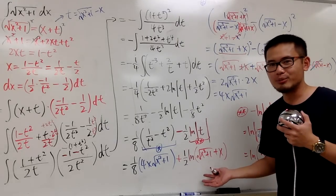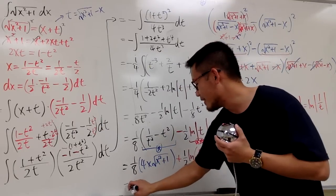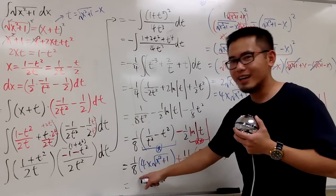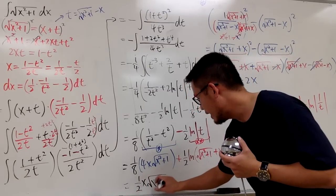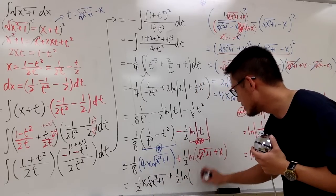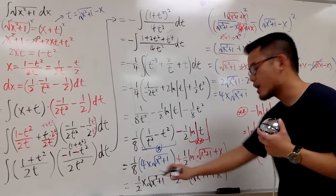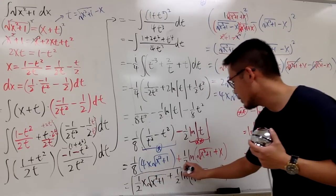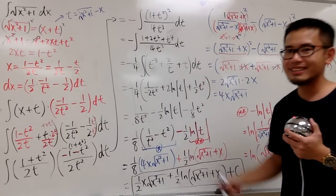Combining everything: 4 over 8 is 1 half, so we get 1 half x√(x²+1) plus 1 half ln(√(x²+1) plus x) plus C. This is exactly the typical answer you get when you do this integral by trig substitution as well. That's it for Euler's substitution!